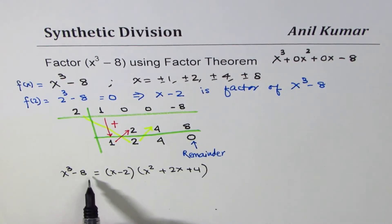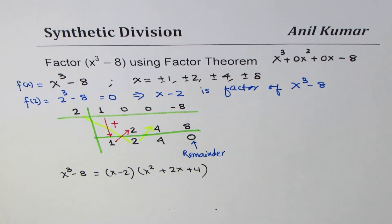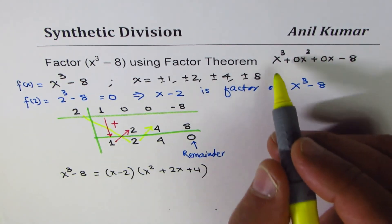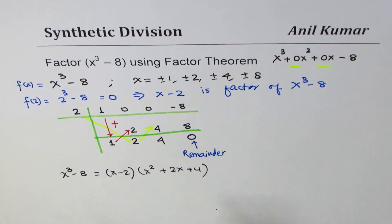So x cubed minus 8 equals to x minus 2 times x squared plus 2x plus 4. I hope the steps involved are clear. Important thing to consider is to introduce placeholders if the terms are missing in between.